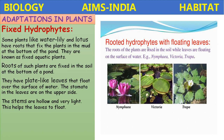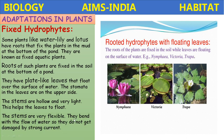The stems of fixed hydrophytes are hollow and very light, which helps the leaves to float. These rooted hydrophytes have roots fixed in the soil while leaves float on the surface. Examples include Nymphaea, lotus, Victoria, and Trapa. The stems are very flexible and bend with the flow of water so they do not get damaged by strong water currents.